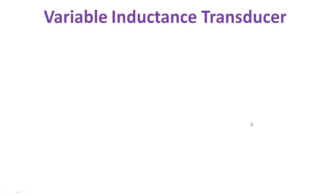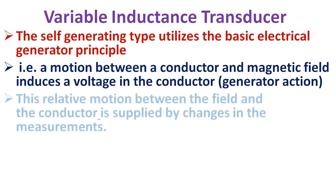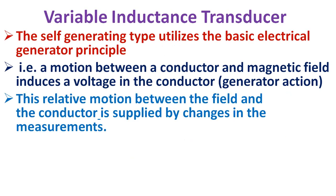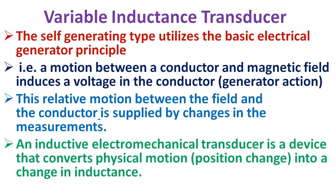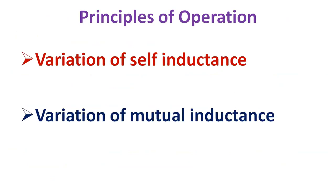Variable inductance transducers may be either the self-generating or the passive type. The self-generating type utilizes the basic electrical generator principle — a motion between a conductor and the magnetic field induces a voltage in the conductor, as seen in a generator. The relative motion is supplied by changes in the measured quantity. An inductive electromechanical transducer converts physical motion, that is position change, into a change in inductance. Variable inductance transducers can be classified as based on self-inductance and based on mutual inductance.